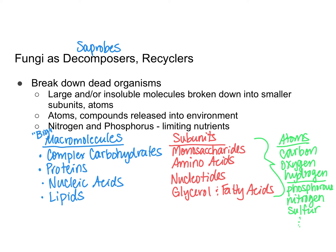Nitrogen and phosphorus are especially considered limiting nutrients, so it's really important that these nutrients get released from dead organisms and return to the environment so that other organisms can have access to them. Nitrogen and phosphorus are needed for making nucleotides, which allow us to make nucleic acids like DNA and RNA. They're also needed to make amino acids, which we need in order to make proteins.